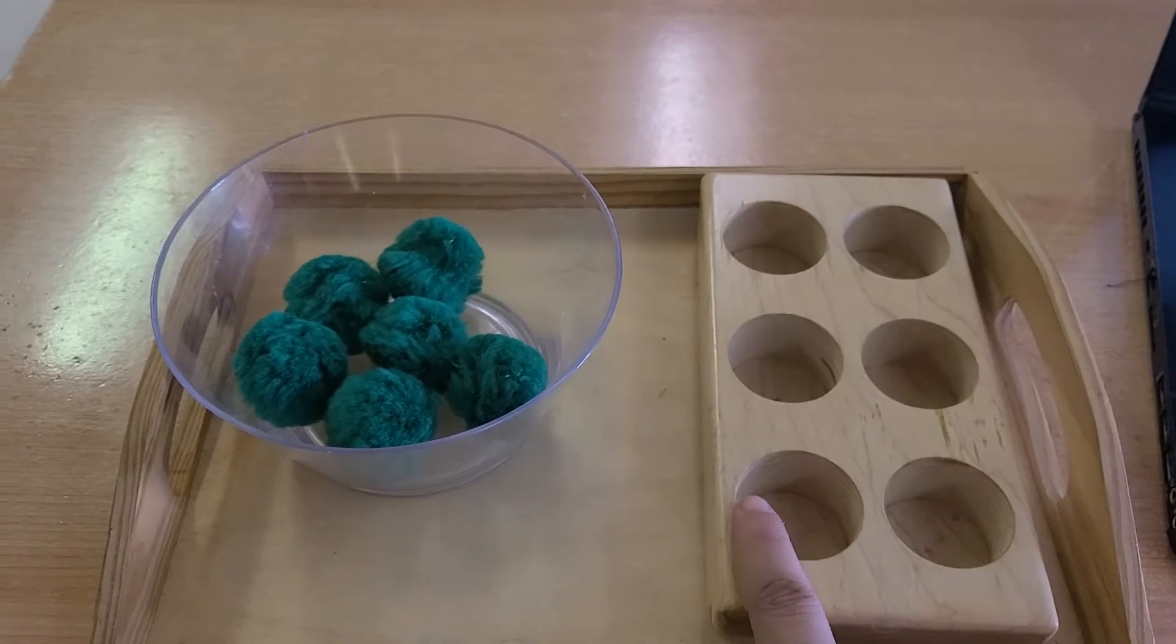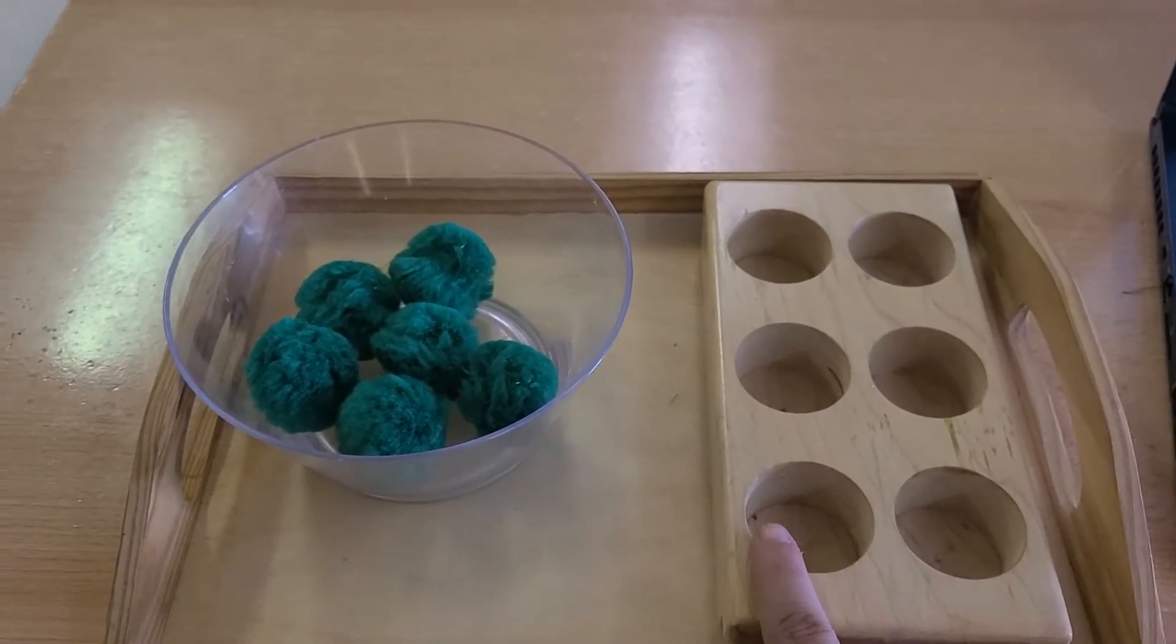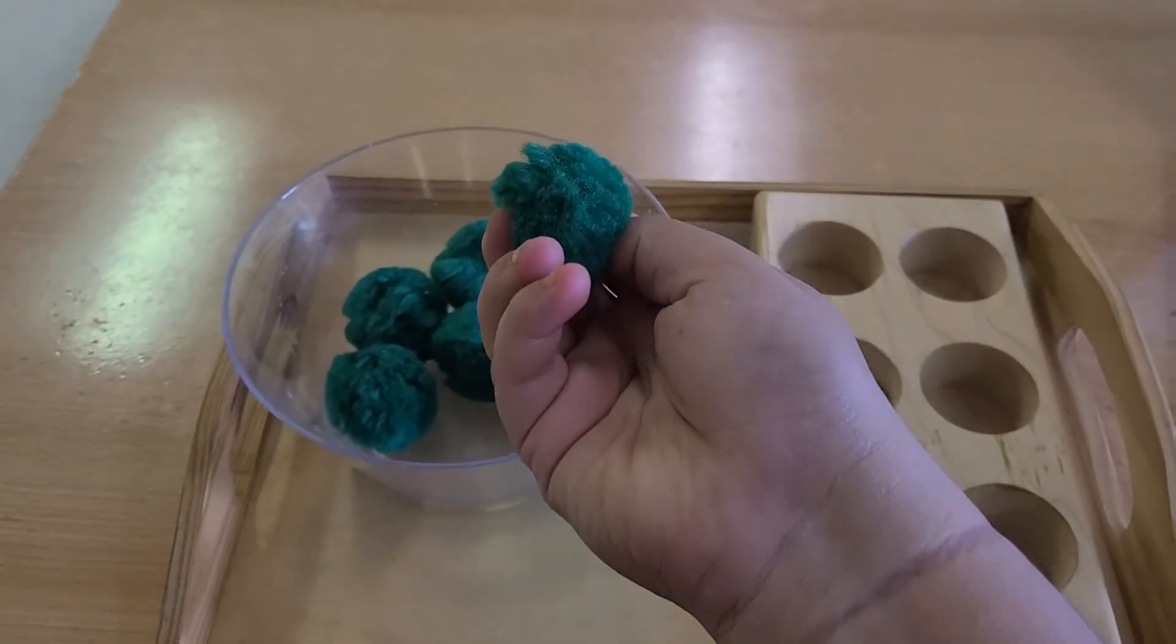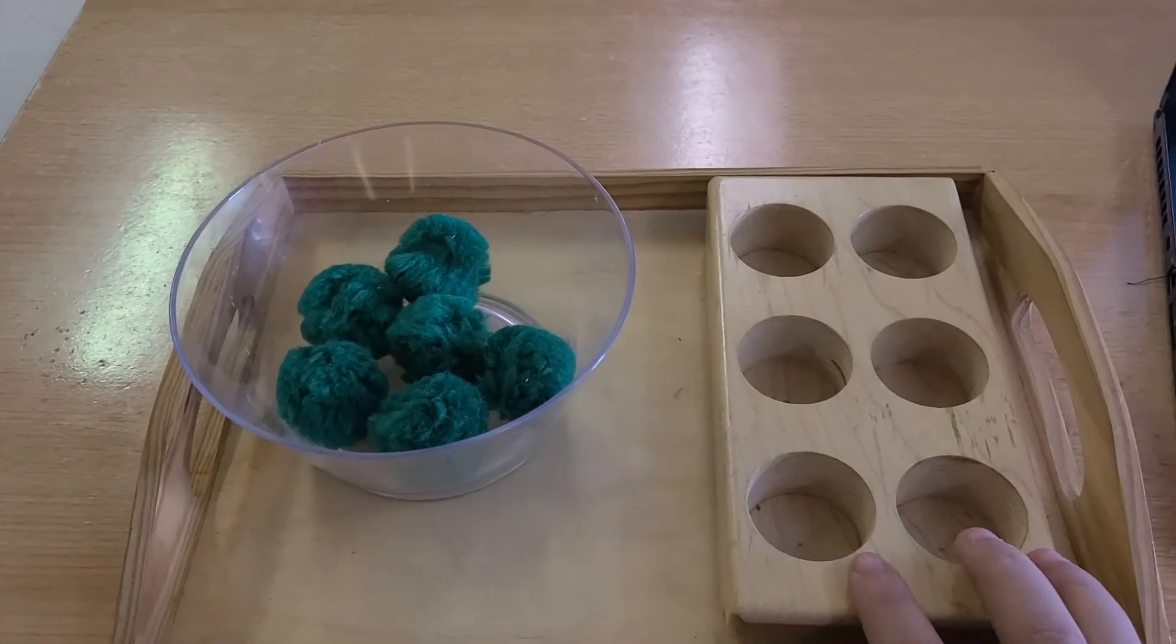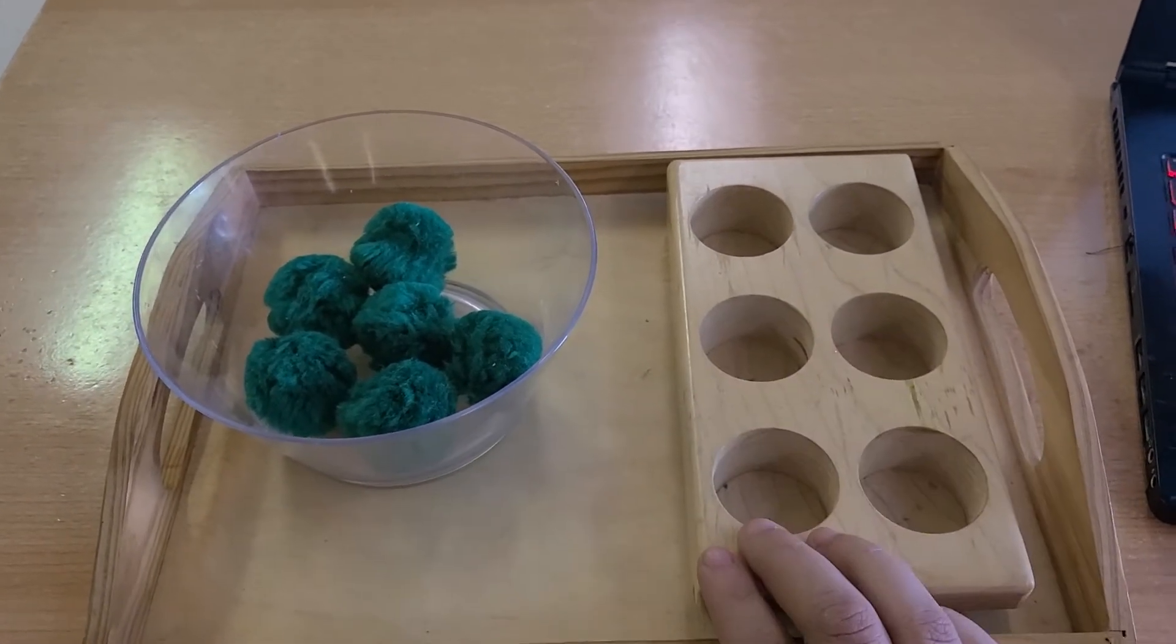So if you're using like an ice cube tray then the objects can be a little smaller, if you're using a cupcake tray they can be a little bit more medium such as the cotton balls, and if you're using the muffin tins then they need to be larger objects such as a ball or something like that.